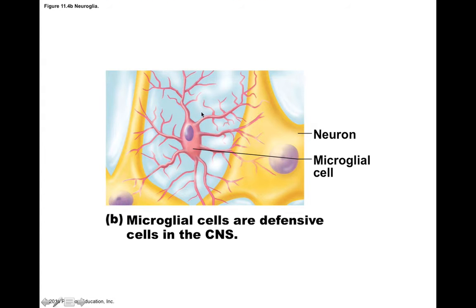Microglial cells have a thorny appearance and normally exist in the brain in their inactive form. They are activated by chemicals and exposure to foreign microorganisms. Once activated, microglial cells mount an immune response by initiating inflammation and transforming into large phagocytes that can engulf and remove debris from the brain.